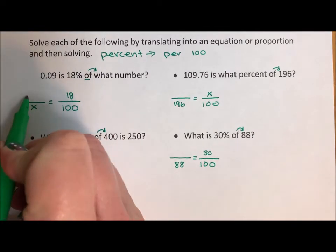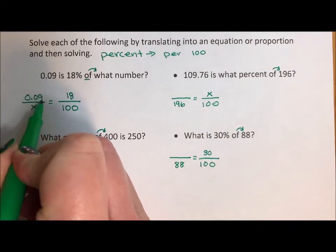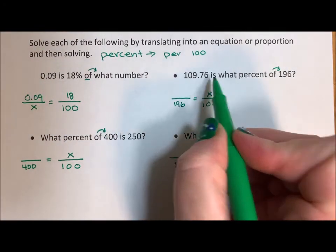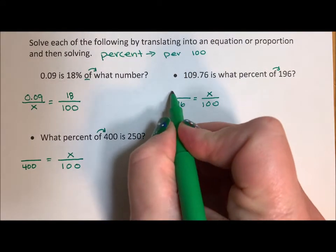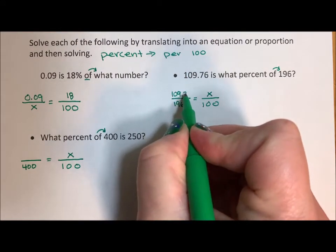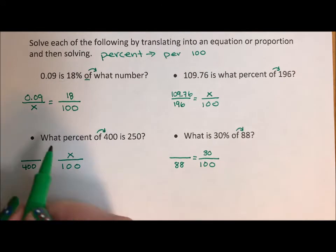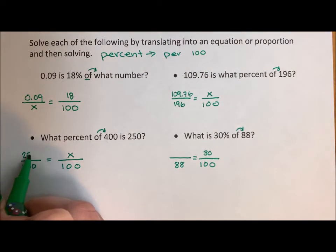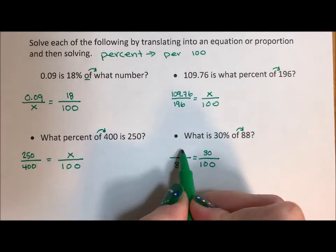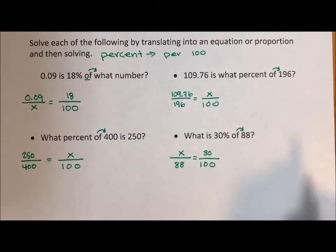And then your last number fills in your last spot. So I have a 0.09. I have a 109.76. I have a 250. And I don't have anything, so I put in an X. Now notice, I haven't actually read anything. All I've done is pattern match. And when you do a proportion for these percent problems, pattern matching is okay.